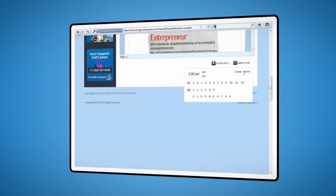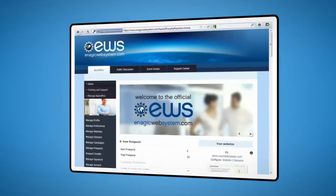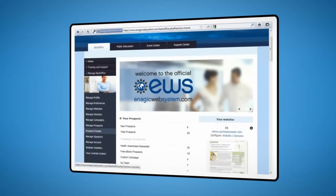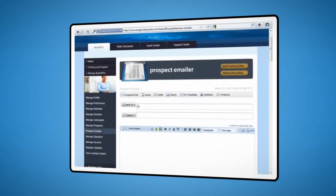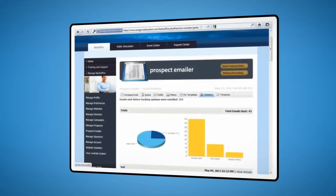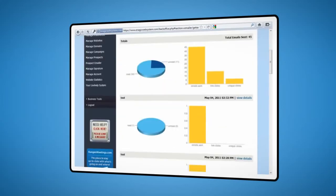You can also use the EWS emailer to learn more about each prospect. The email statistics tool will quickly show you the emails and links each recipient opened. This way, you'll learn a lot about what your prospects are interested in.